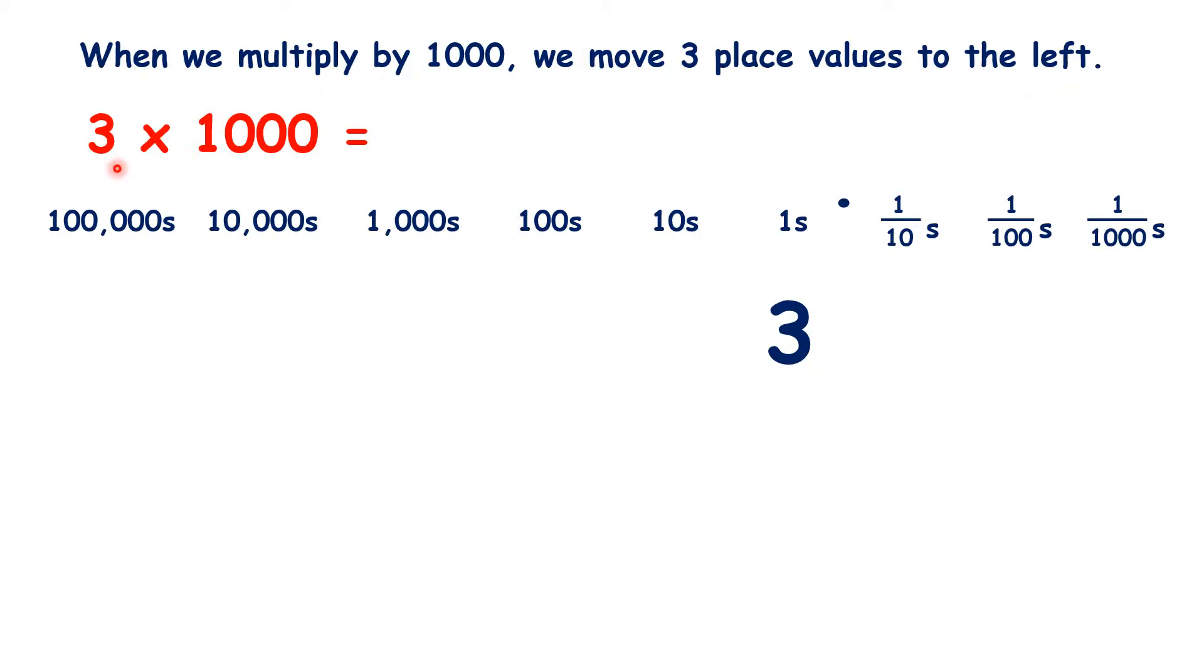So if we have 3 times a thousand, what we're really doing is moving the 3 three places to the left, then we write zeros in our empty hundreds, tens, and units columns to get our answer 3,000.